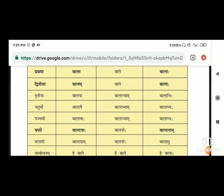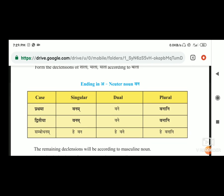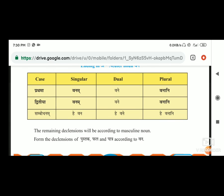So these changes are the changes - if the masculine changes and feminine changes, then the neutral changes are the changes. The neutral changes are the first, second, and direct relationship. The remaining declension will be according to masculine names, from the declension of pushtak, phal, and patra according to one. That is the same way you can see - this is the neutral noun.